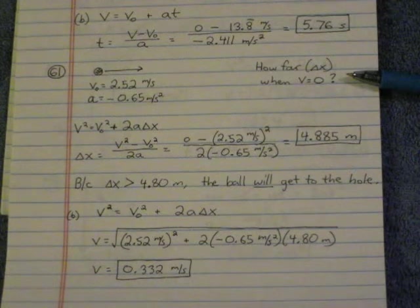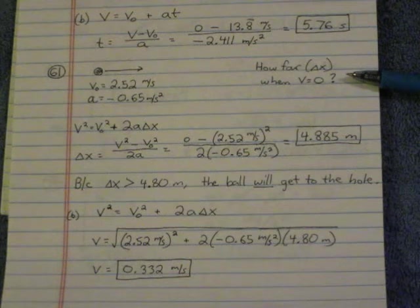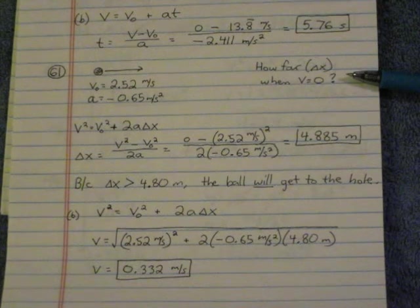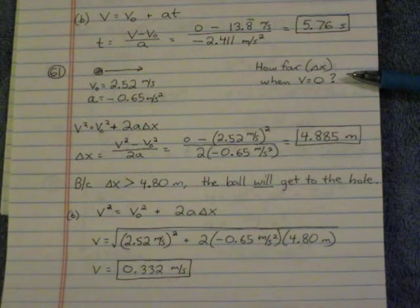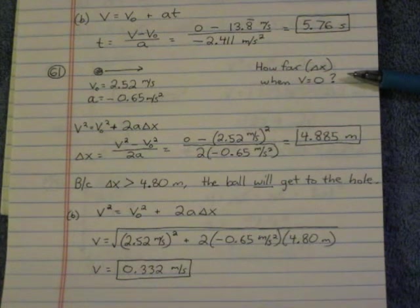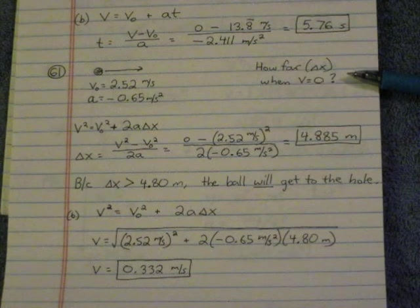And it goes like this, if that displacement is less than 4.8 meters, the distance to the hole, that means it will not make it to the hole, because it will have stopped. If it's 4.8 meters or greater, that means it will get to the hole. So that's how I choose to solve this. But in a minute I'll tell you about another way to solve this, is to do part B.